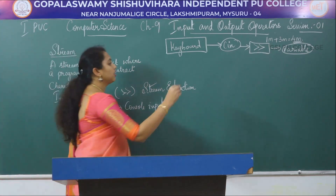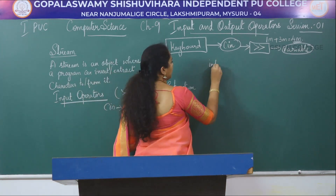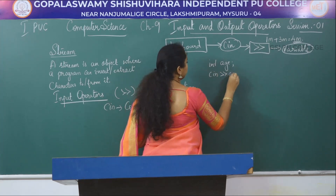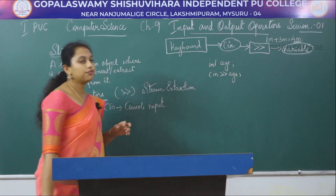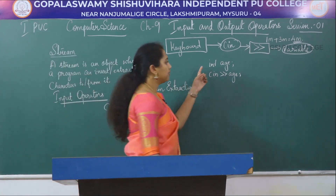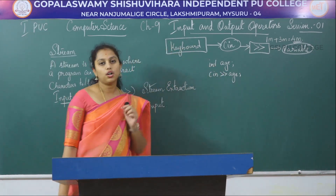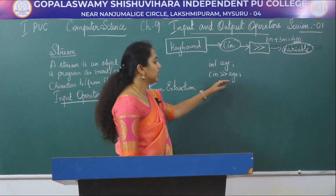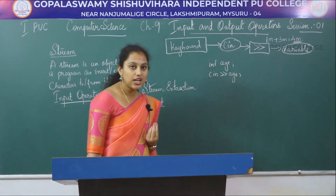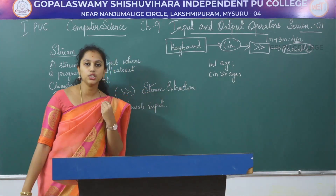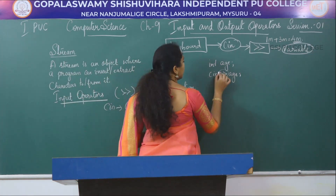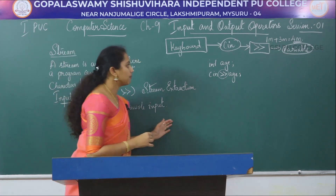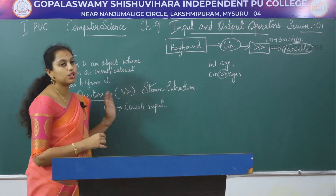For example: int h; cin >> h. In the first statement we are declaring a variable h of type int. The second statement is used to extract the value of h from the user using the stream extraction operator. This is about input operators.